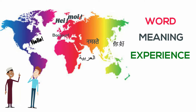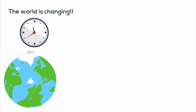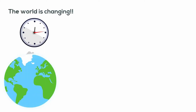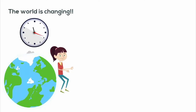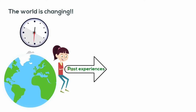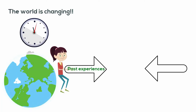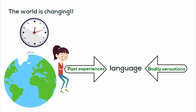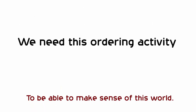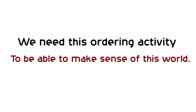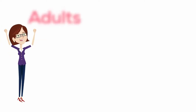While the world around us is constantly changing, our language has categories that order the world and resolve the disjuncture between past experiences and bodily sensations. Without this ordering activity, we would be unable to make any sense of the world at all. As adults, we live most of our time in a stage where we take the world for granted.